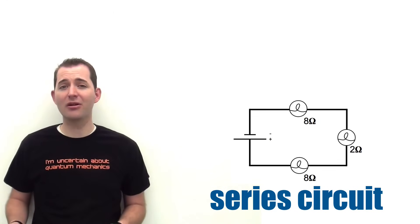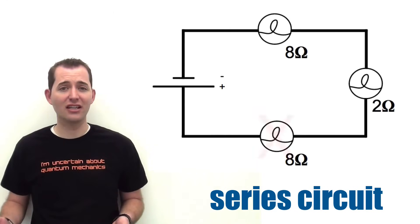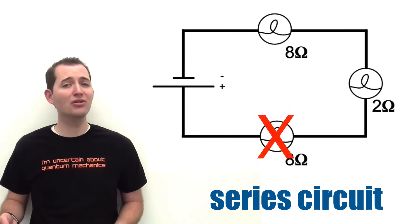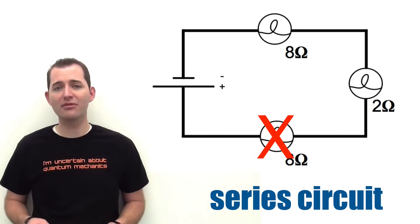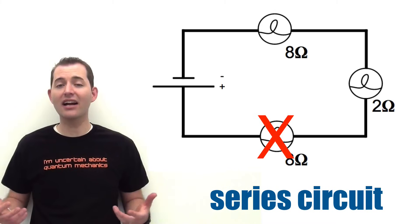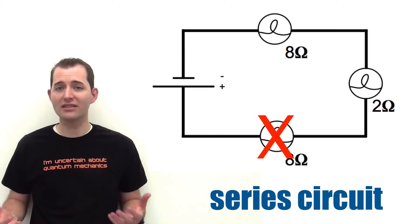For example, in our circuit if two of the bulbs have a resistance of 8 ohms and one has a resistance of 2 ohms, we would simply add 8 ohms plus 8 ohms plus 2 ohms. This gives us a total resistance of 18 ohms for our series circuit. Another key thing to note about a series circuit is if we remove any one of the bulbs, the entire circuit goes dead.